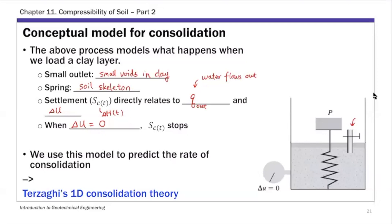For today's lecture, this is Chapter 11, Part 2: Time Rate of Consolidation Calculation. Just a very quick review of what we covered last time. Last time we went over the conceptual model behind Terzaghi's 1D consolidation theory.